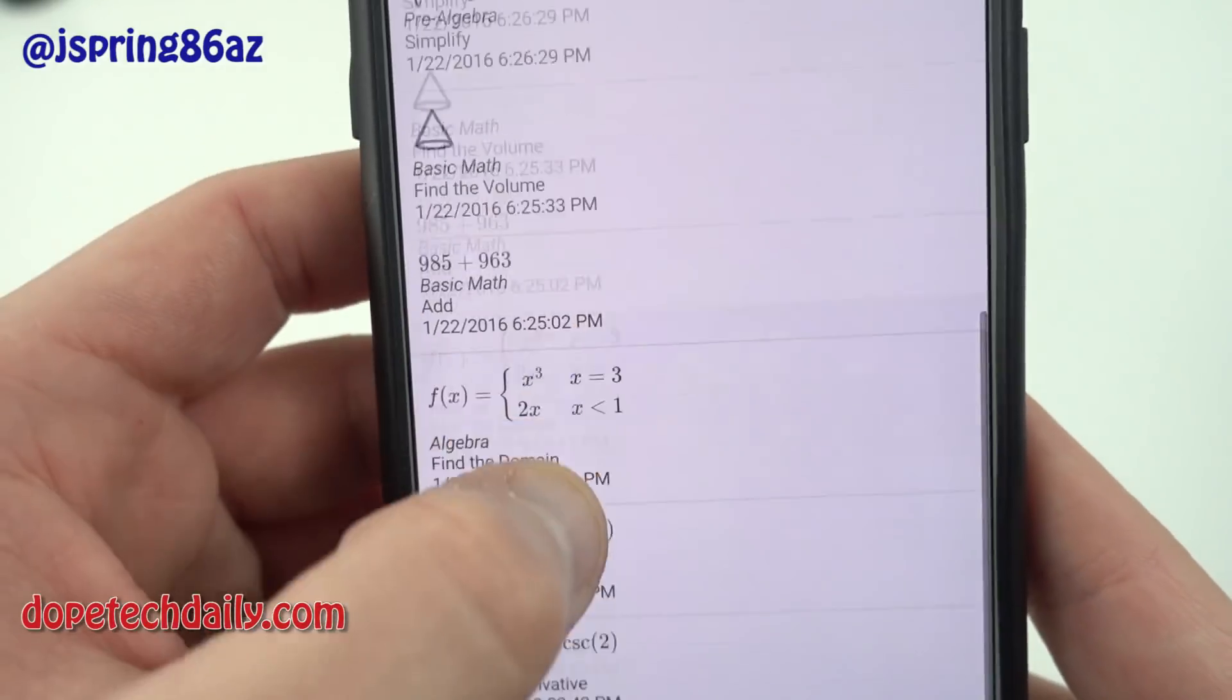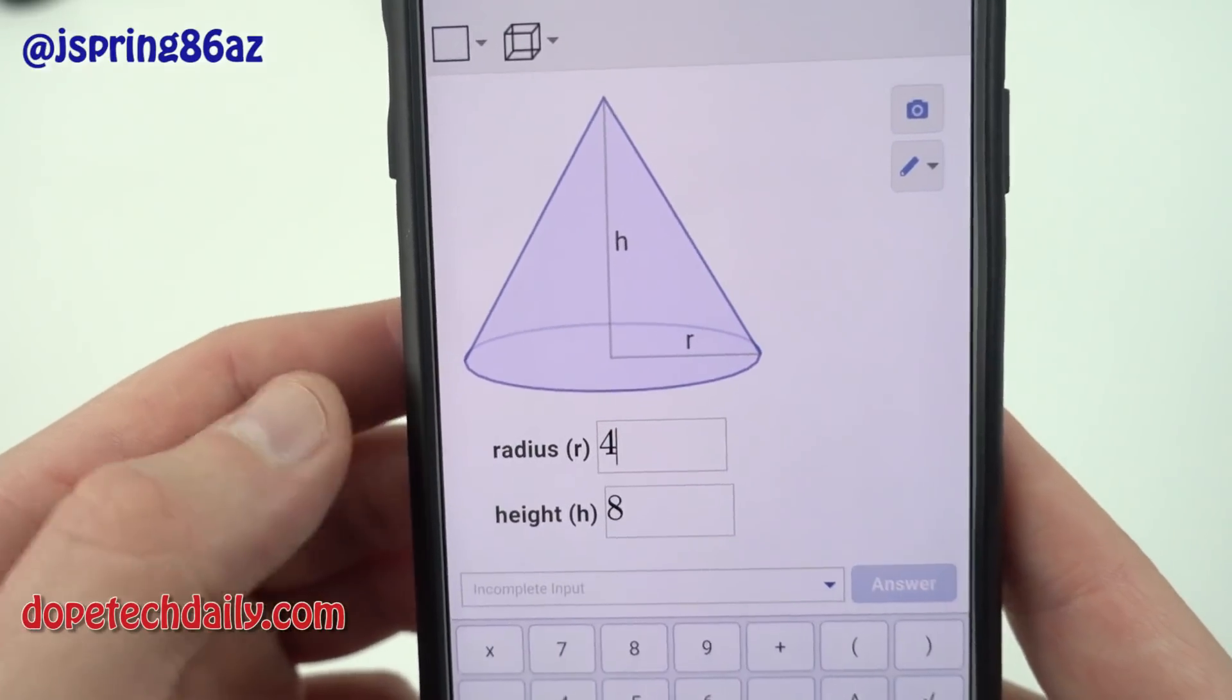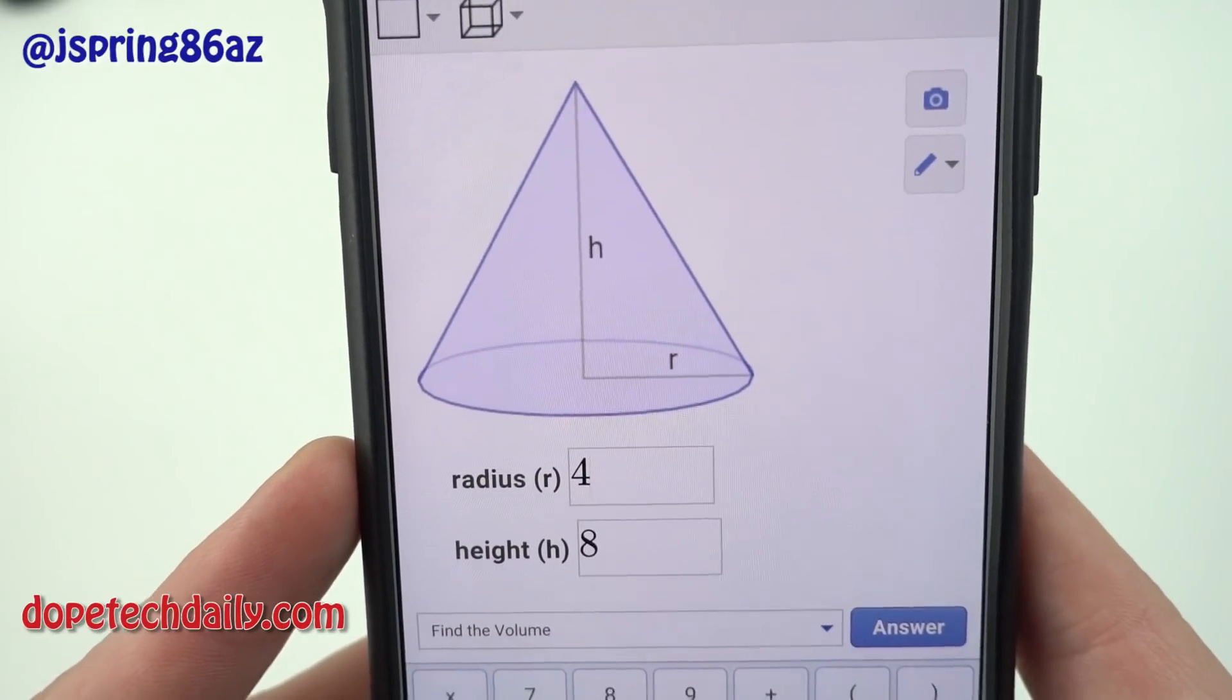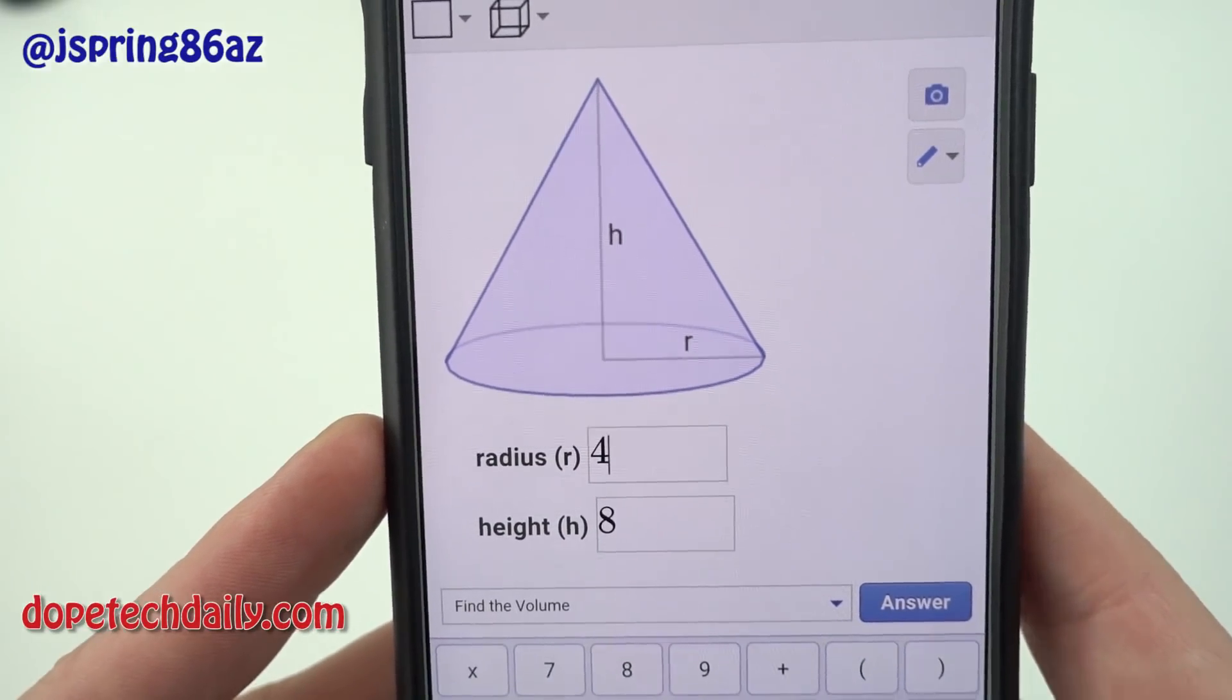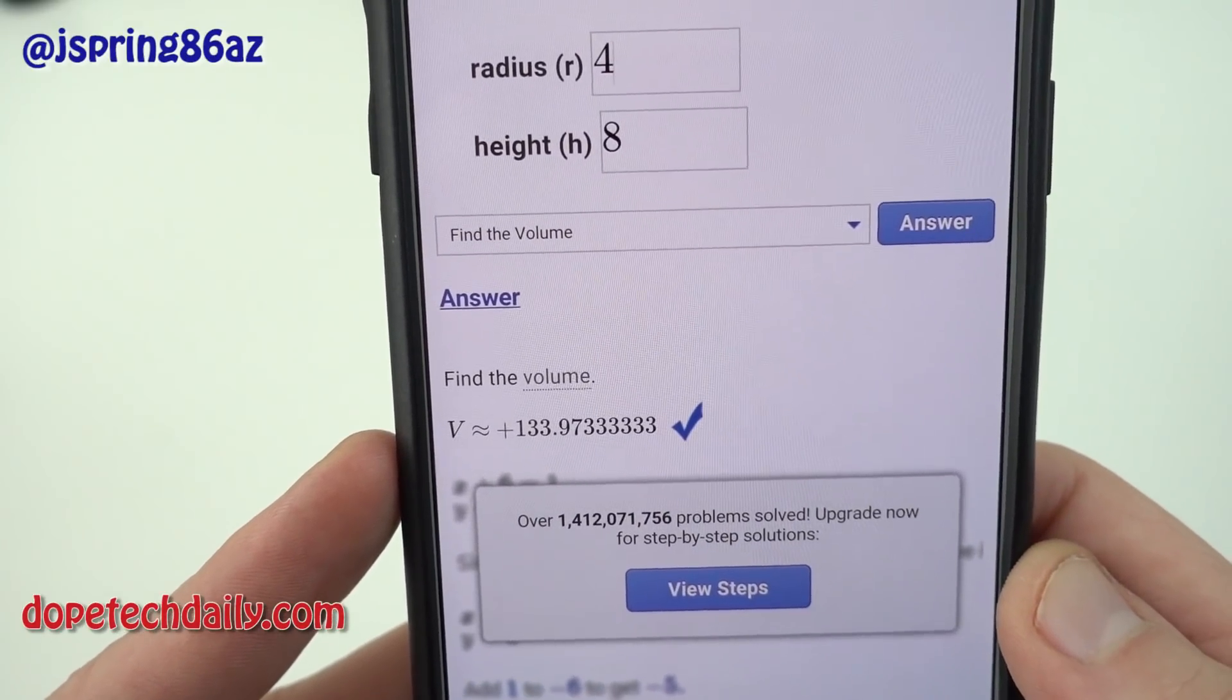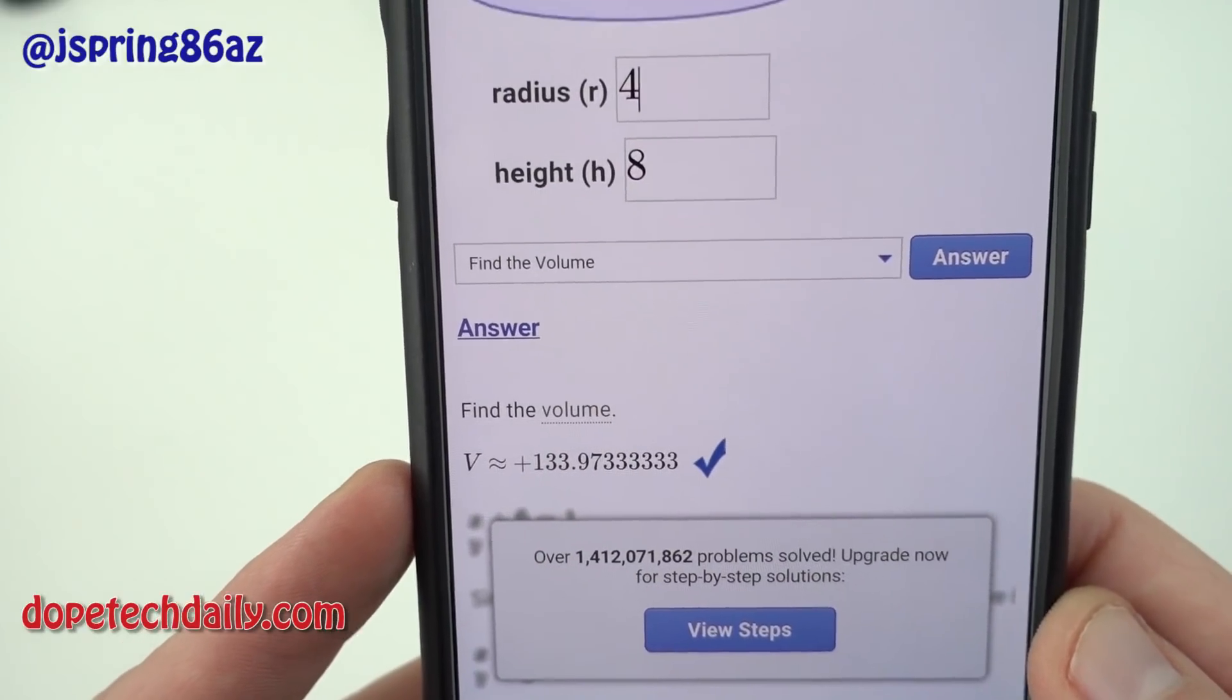So I'll just show you really quick. For instance with the cone if you want to find the volume it actually shows you a graphical user interface with the cone and you specify the radius and the height and it does all the calculation for you. So the one downside as you see there it shows you the volume it's positive 133.97333 repeating.